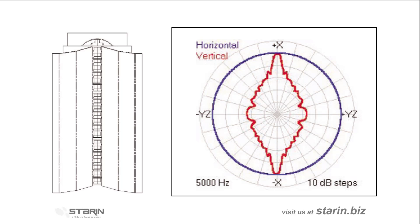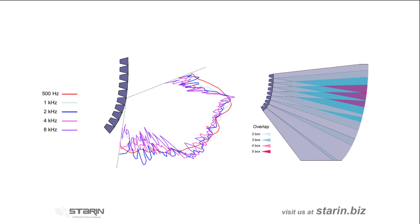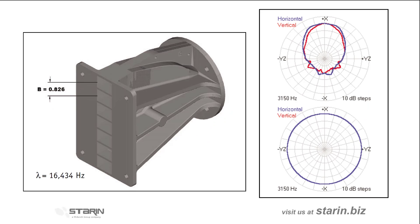But what we can do is utilize high-frequency drivers with the appropriate waveguide to create a mechanical pattern that matches the characteristics of the line-array at low and mid frequencies. So, if we were to calculate the vertical pattern of a 12-element line-array from 100 Hz to 400 Hz at about 5 degrees, we can choose a high-frequency driver's waveguide to also disperse at about 5 degrees.